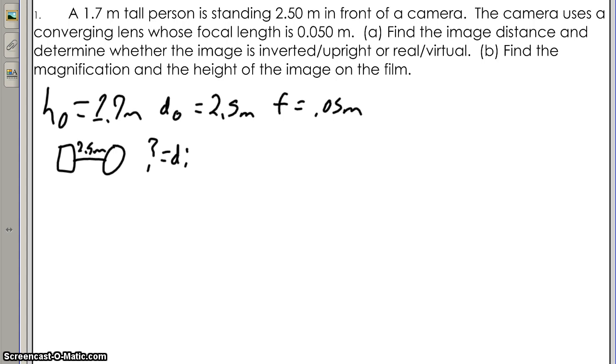In order to find that, you need the equation 1 over dI plus 1 over dO is equal to 1 over the focal length. Since you already have the distance of the object and the focal length, you can subtract the distance of the object from the focal length in order to find dI.